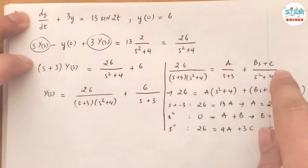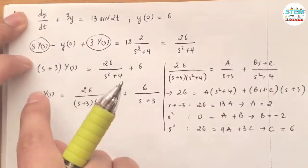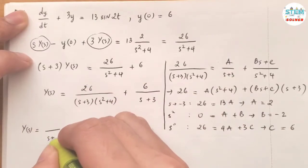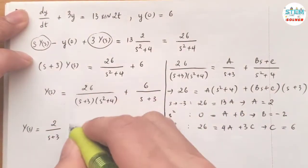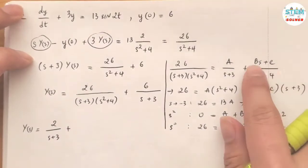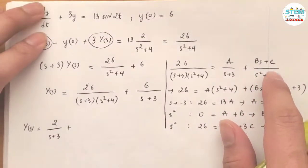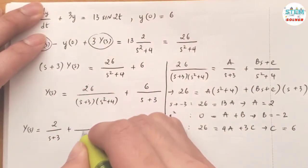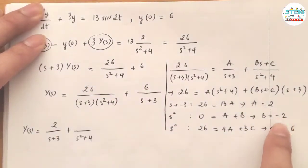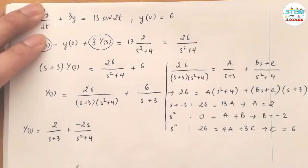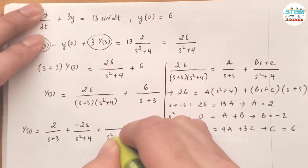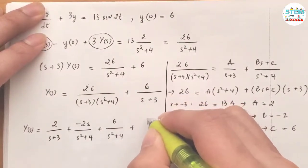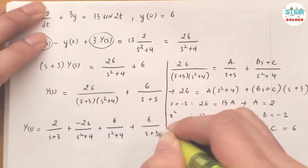Now plugging A, B, and C back in, the partial fraction becomes: 2 over (s plus 3) plus Bs plus C over (s squared plus 4). Breaking the second fraction into two: plus negative 2s over (s squared plus 4), plus 6 over (s squared plus 4). Don't forget to add the second term: plus 6 over (s plus 3).